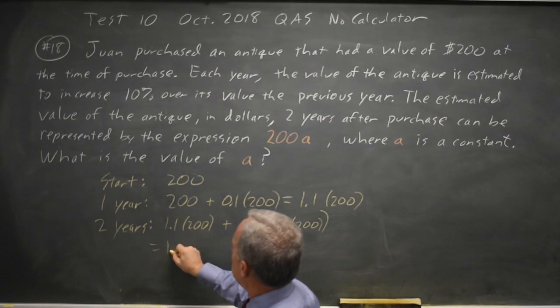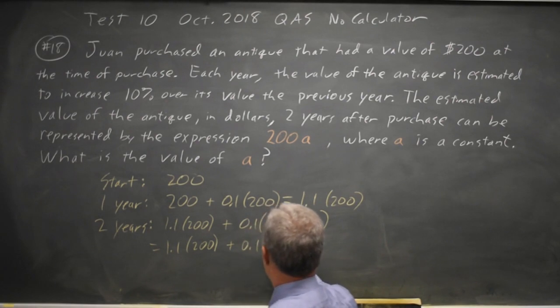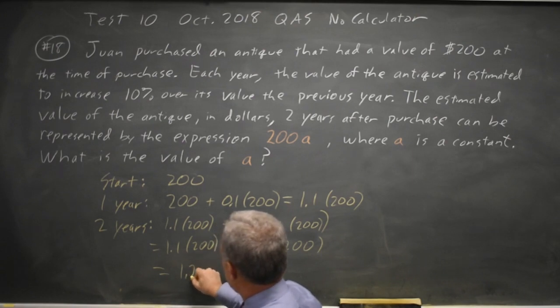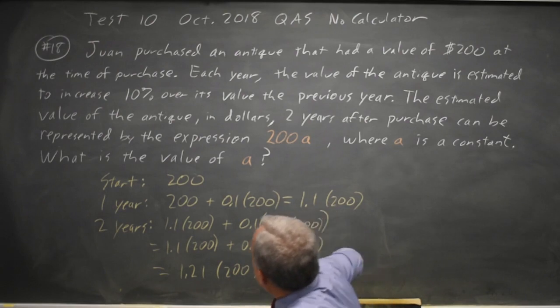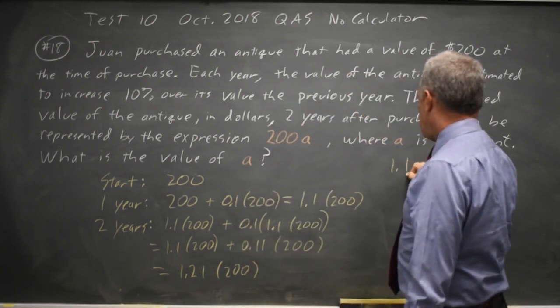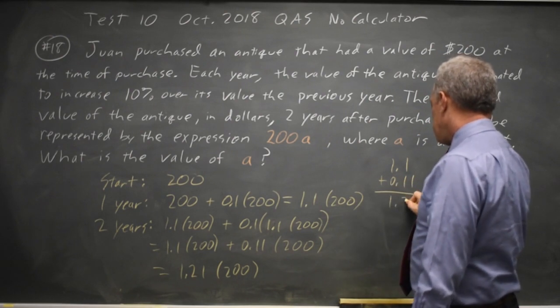Which is 1.1 times 200 plus 0.11 times 200. Since 0.1 times 1.1 is 0.11, this equals 1.21 times 200, because I just added 1.1 plus 0.11 to get 1.21.